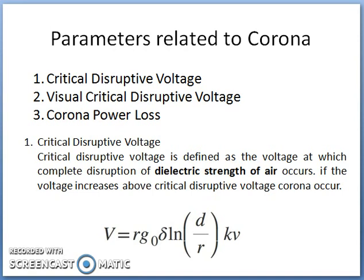Now let us see some of the parameters that are related to corona. One is critical disruptive voltage, another is visual critical disruptive voltage, and another is corona loss. The critical disruptive voltage is defined as the minimum phase-to-neutral voltage at which corona occurs, denoted by V or V_D. It is also defined as the voltage at which complete disruption of the dielectric strength of air occurs. If the voltage increases above the critical disruptive voltage, then corona occurs.